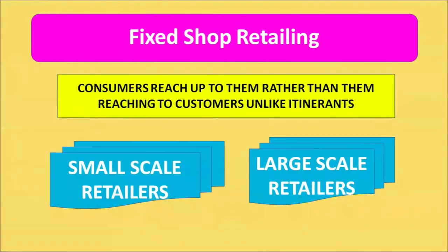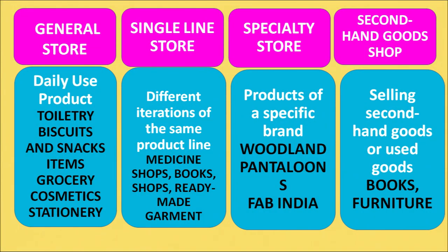Fixed shop retailing is altogether different from itinerant retailing — in fixed shop retailing, consumers reach up to the retailers rather than the retailers reaching up to customers. Fixed shop retailing can be maintained at a smaller or larger scale. There are four broad categories of small scale retail shops: a general store, a single line store, a specialty store, or a store for second-hand goods.